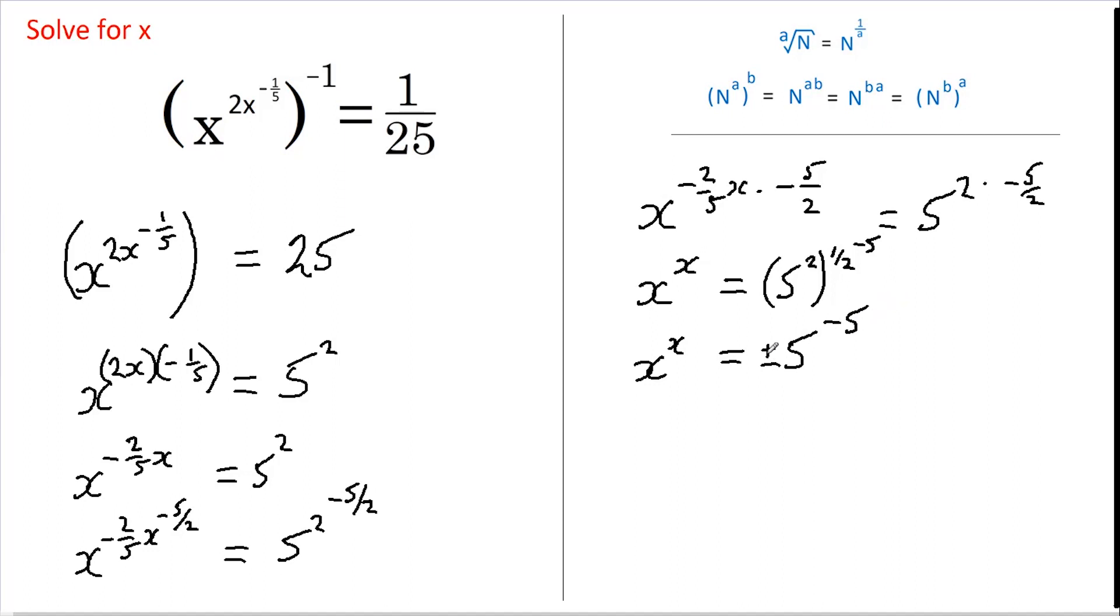Now if we ignore the positive 5 here, we can rewrite this as x to the power of x equals negative 5 to the power of negative 5. And you should be able to see through the similarity of these two terms that x must equal negative 5.